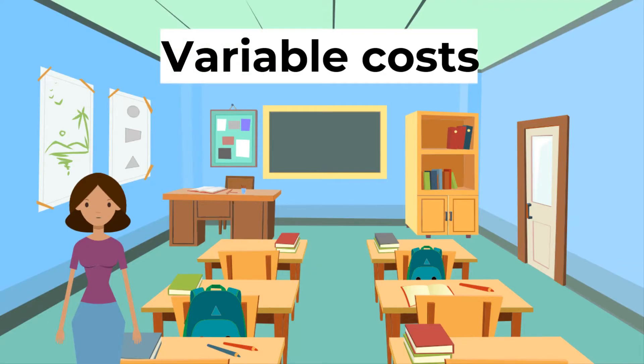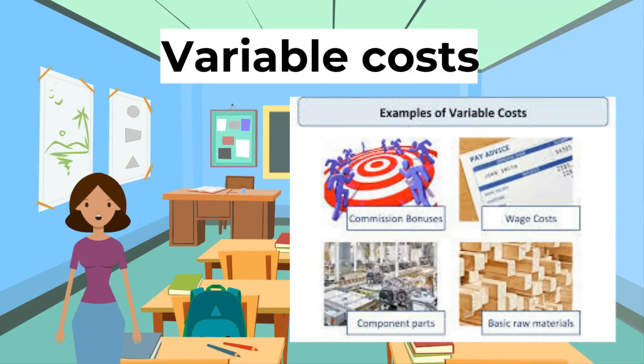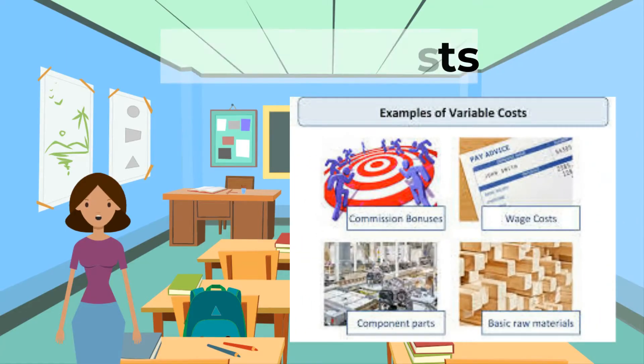Next, variable costs. Variable costs are costs that directly vary with the output produced or sold. Examples are material costs and wage rates that are only paid according to the output produced.